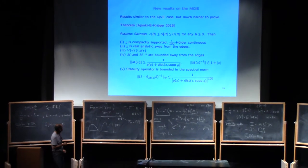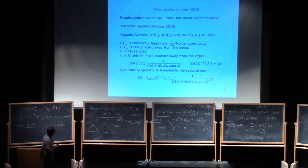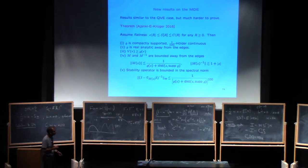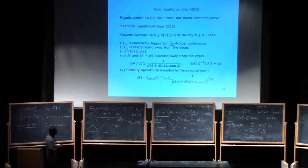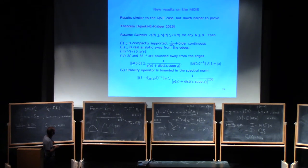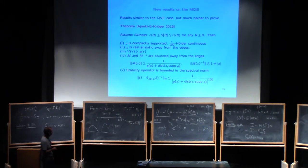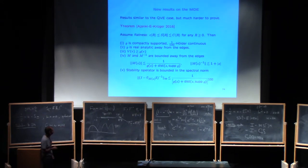Under this condition we get basically everything we had before: the density is compactly supported, we get Hölder continuity — though not the optimal one-third Hölder continuity, for that one needs extra conditions — but at least some kind of Hölder continuity, real analyticity away from the edge, and also bounds on M and its inverse. The precise form of the bounds are not terribly important; these are the natural analogs, similar bounds as in the vector case.